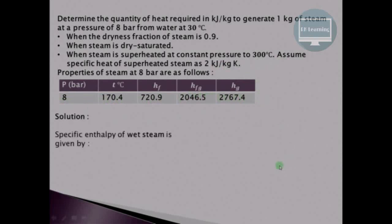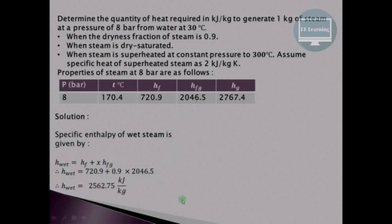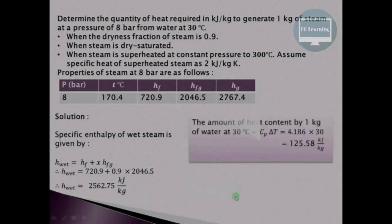For Case 1, the steam is wet. The specific enthalpy of wet steam is H_wet = HF + X·HFG. Substituting values: HF from the table is 720.9 kJ/kg, dryness fraction X is 0.9, and HFG is 2046.5 kJ/kg. Since the steam is generated from water at 30°C, that water already contains some heat given by mCpΔT. With Cp of water = 4.186 and ΔT = 30°C, this gives 125.58 kJ/kg.